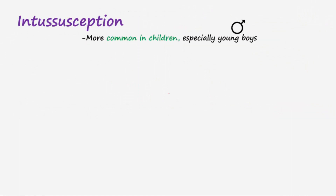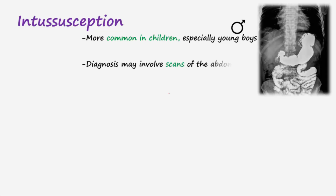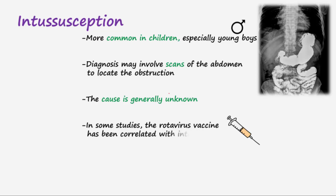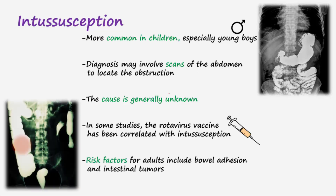Intussusception is more common in children, especially young boys. Diagnosis may involve scans of the abdomen to locate the obstruction. When intussusception happens in children, the cause is generally unknown. Although the benefits of getting the rotavirus vaccine as a child outweigh the cons, the rotavirus vaccine has been correlated with intussusception in some studies. Risk factors for adults developing intussusception include bowel adhesions and intestinal tumors.